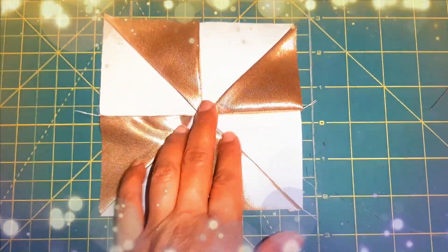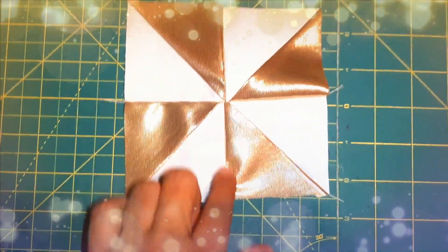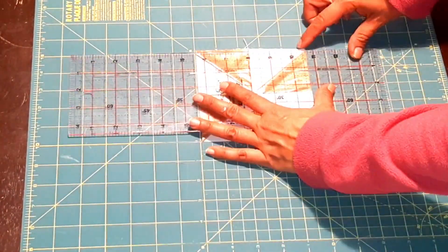So here's my star. The gold fabric was a little slippery so it was hard to get the points to match perfectly, but I think it's close enough. I'm happy with it. So I'm gonna trim this block down to five inches and continue assembling my block.